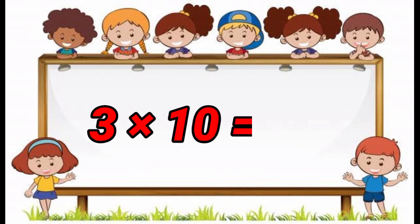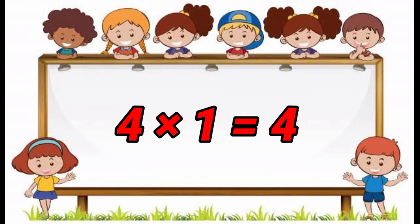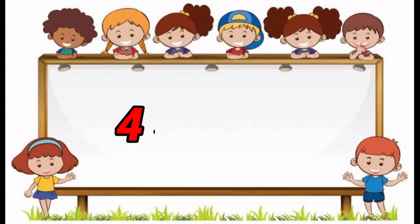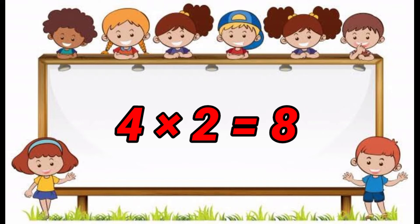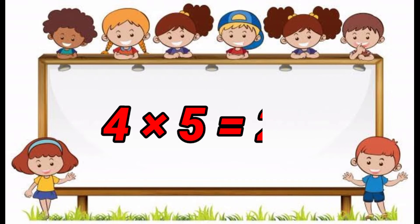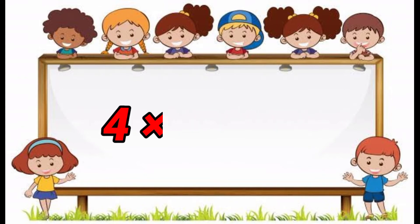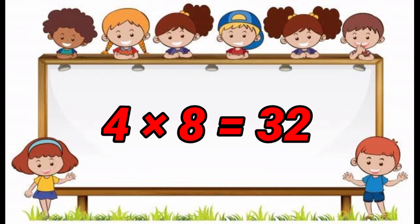3 10's are 30. Table of 4. 4 1's are 4. 4 2's are 8. 4 3's are 12. 4 4's are 16. 4 5's are 20. 4 6's are 24. 4 7's are 28. 4 8's are 32. 4 9's are 36.